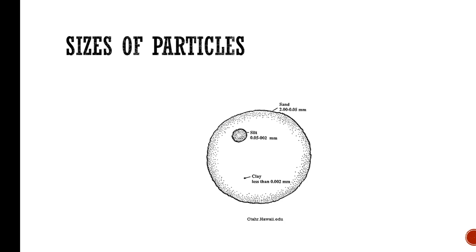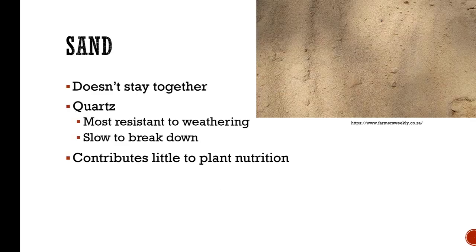This is a really great visual on the differences in soil particles. Sand is the largest particle that can be seen with the naked eye. Silt needs to be under a microscope, and clay needs a specialized microscope — it's really tiny. If you have a sandy soil, it doesn't stay together, so it doesn't aggregate, which is really important to hold moisture in the soil. Much of the sand we have is quartz-based — it's the most resistant to weathering, very slow to break down, and really doesn't contribute anything to plant nutrition.